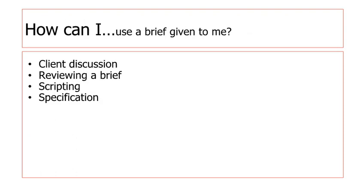If you get given a brief, it can come in different ways. One form is a client discussion, which is one of the best ways to get information. When you're sat down with a client you can ask them specific information, whether they've got any ideas, anything they've seen in the past that they want to mimic, or other examples of work previously done. You can also talk to them about colour schemes, font usage — it's all really nice and clear.